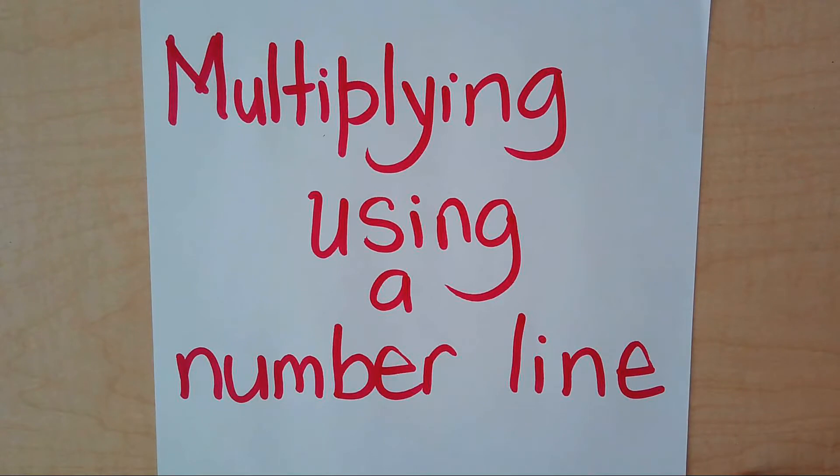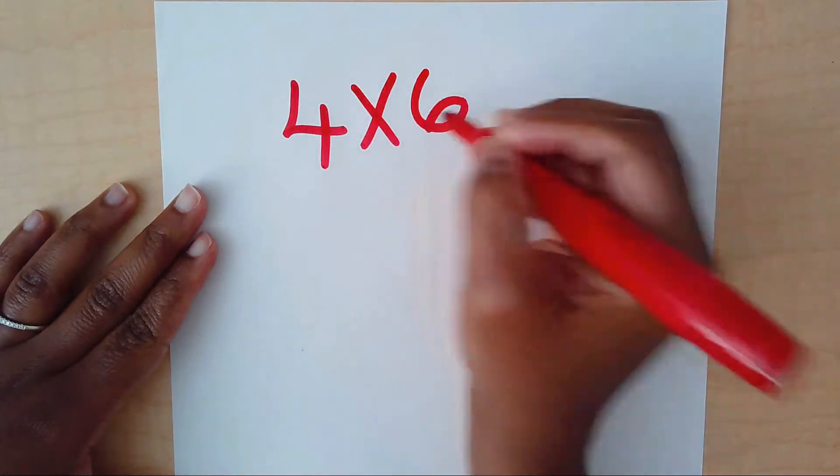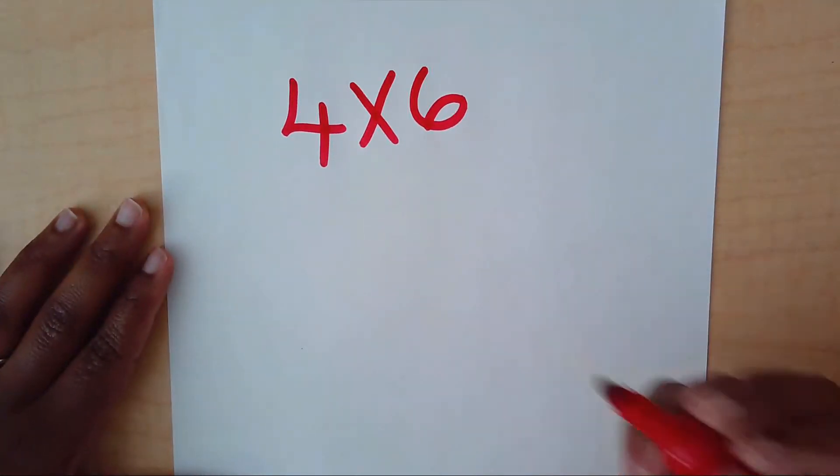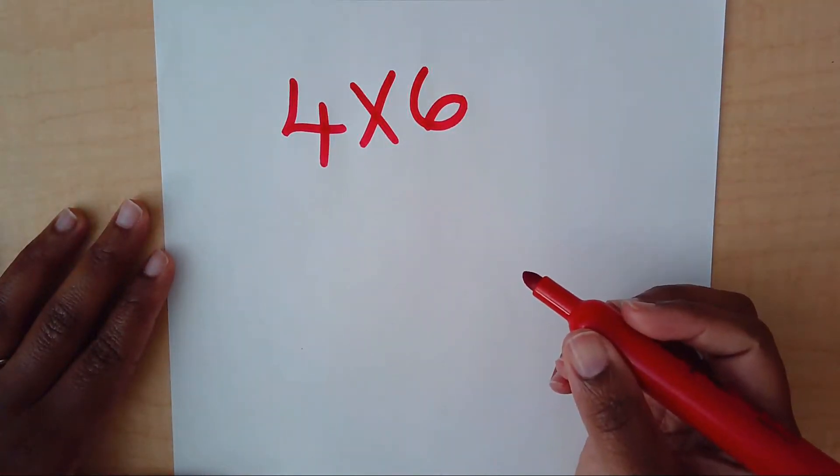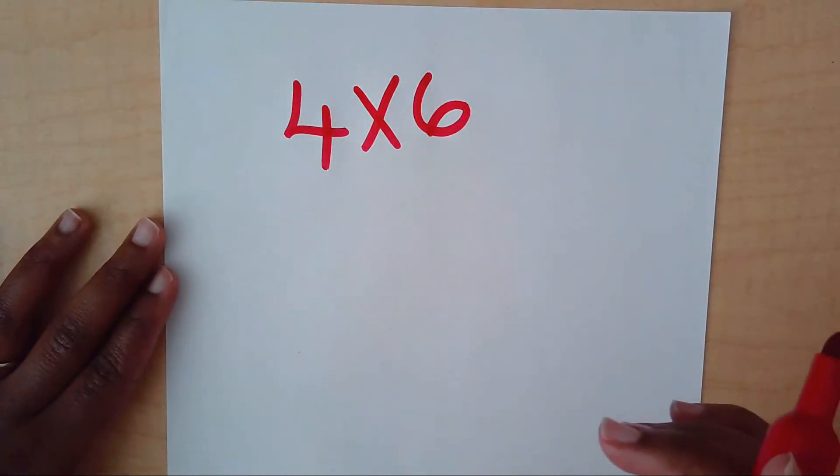So today we're going to talk about multiplying using a number line. It is definitely going to be one of the easiest things you'll ever do. Usually you know that multiplying requires you to keep adding to get your number. Now I'm going to show you how you can multiply using a number line. Usually there's equal groups, repeated addition, the area model, the use of arrays. But as I said, this video is about multiplying with a number line.